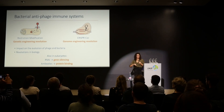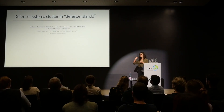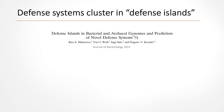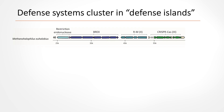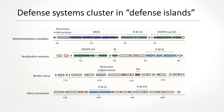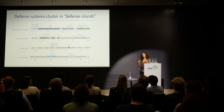We were very interested in finding new immune systems. Luckily, it's been shown that defense systems tend to cluster in bacterial genomes, forming what is termed defense islands. You can see here a segment of a genome where four different defense systems sit right next to each other. Different genomes show different combinations of defense systems in close proximity.